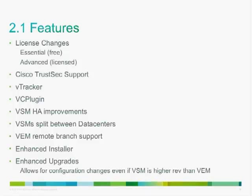Version 2.1 came out in November, and the biggest changes include licensing, Cisco TrustSec support, and VTracker. VTracker allows the Nexus 1000V to talk to VMware vCenter and pull down VM-specific information — such as uptime, CPU usage, and memory — giving the network admin an in-depth view of the VMs they may be troubleshooting. The VC plug-in does the same thing for VMware admins by making Nexus 1000V config visible through vCenter. Version 2.1 also includes significant VSM HA improvements.